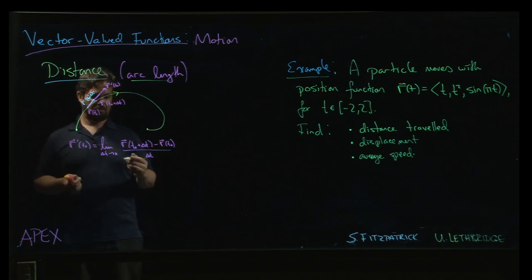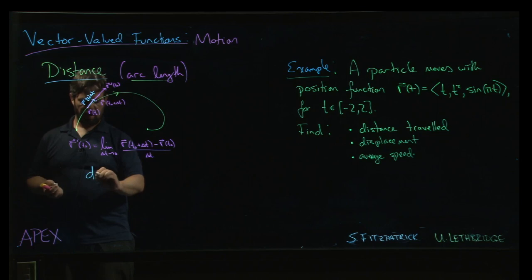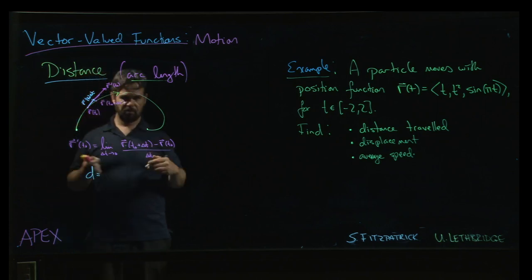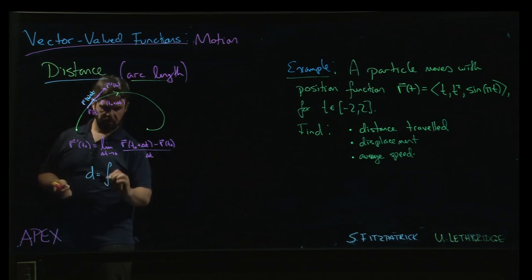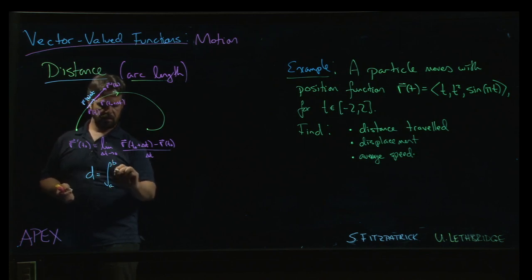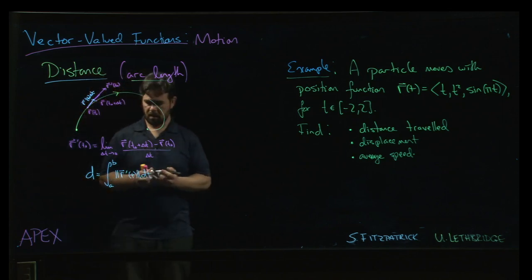So the distance traveled will be the magnitude of r prime times delta t. And so then you can add them all up. So you sum those, take the limit, the usual story, and you end up with an integral. So the distance traveled will be the integral from the starting value to the ending value of the magnitude of r prime times dt. That's it.